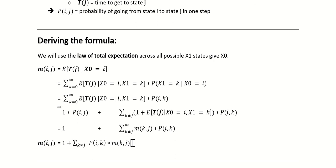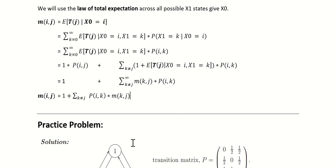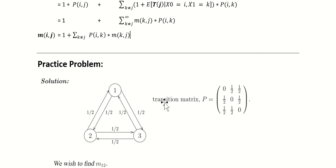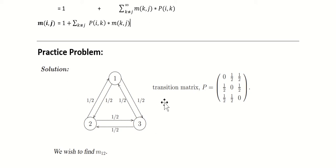So let's look at a practice problem. I've given a very simple transition matrix that is symmetric and not complicated, and you can look at it in graph form right here. We want to find M1-2, which is the expected amount of time it takes to get from state I to state II, or the expected time to reach state II given you start at state I. We just need to form a system of equations to get the answer pretty easily.